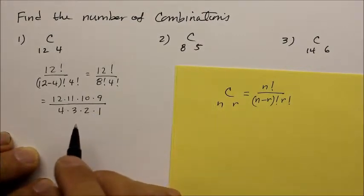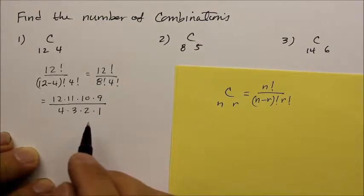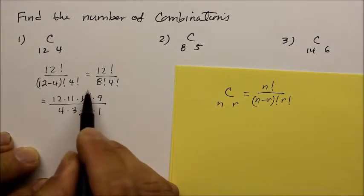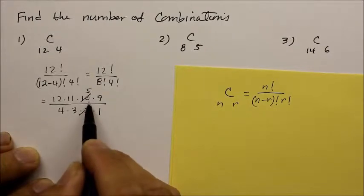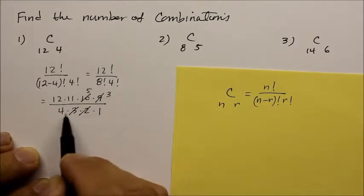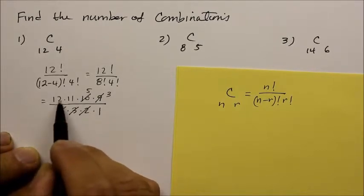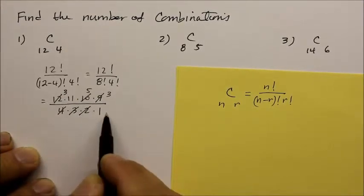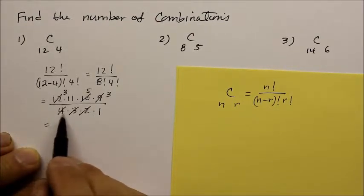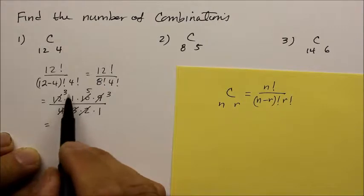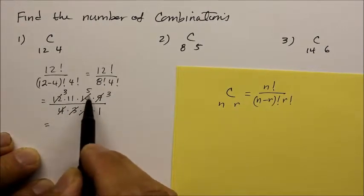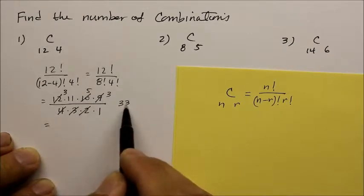And then I'm going to cross cancel. I'm going to simplify the top and the bottom. The 2 here can reduce the 10 five times. And the 3 reduces the 9 three times. And this 4 reduces that 12 three times. So what do I have remaining on the bottom? Just the 1. On the top, 3 times 11, which is 33, 33 times 15.